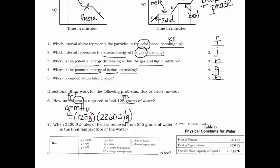The grams cancel each other out, so the units left are joules. All we need to do is multiply 125 times 2260 and we get 282,500 joules. Make sure you box in or circle your answer so it's easy to give you points.